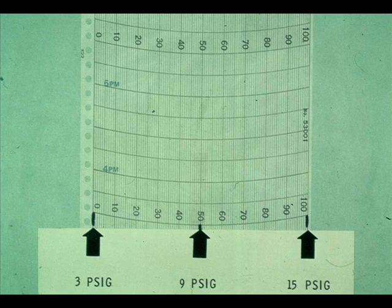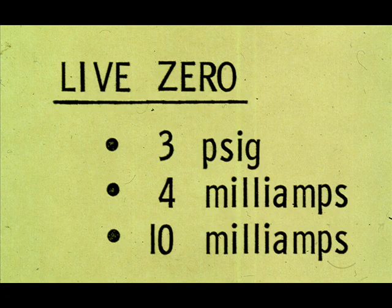This recorder chart is an example of how an air signal from a pressure transmitter positions the process pen. A 3 PSIG signal causes the process pen to read zero. 9 PSIG moves the process pen to mid-scale, and 15 PSIG would move the process pen to the maximum process pressure reading. Notice that the air signal is 3 PSIG when the process pressure is zero. This air signal of 3 PSIG is called a live zero. Similarly, the live zero for electronic instruments is 4 milliamps or 10 milliamps, depending upon the range of signal being used. A live zero is used to prevent a signal failure, which would read zero, from being confused with a minimum process variable reading.